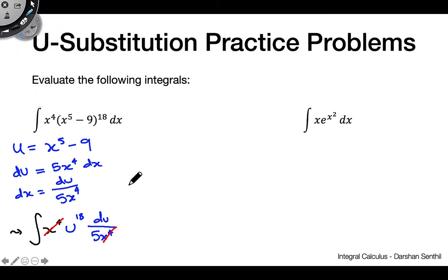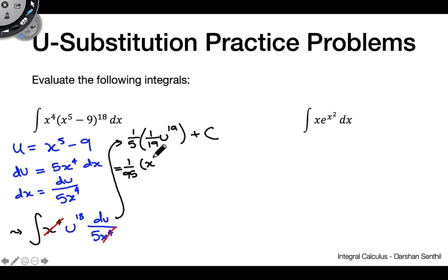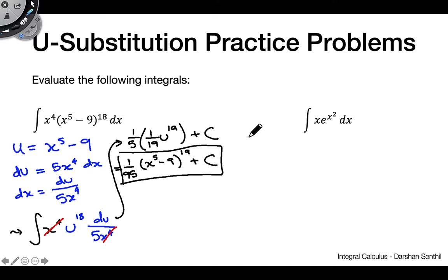So we have 1 over 5 times 1 over 19 times u to the 19th plus c, which is quite nice. Plugging back in for x and multiplying the fractions, our final answer is 1 over 95 times (x to the fifth minus 9) to the 19th plus c.